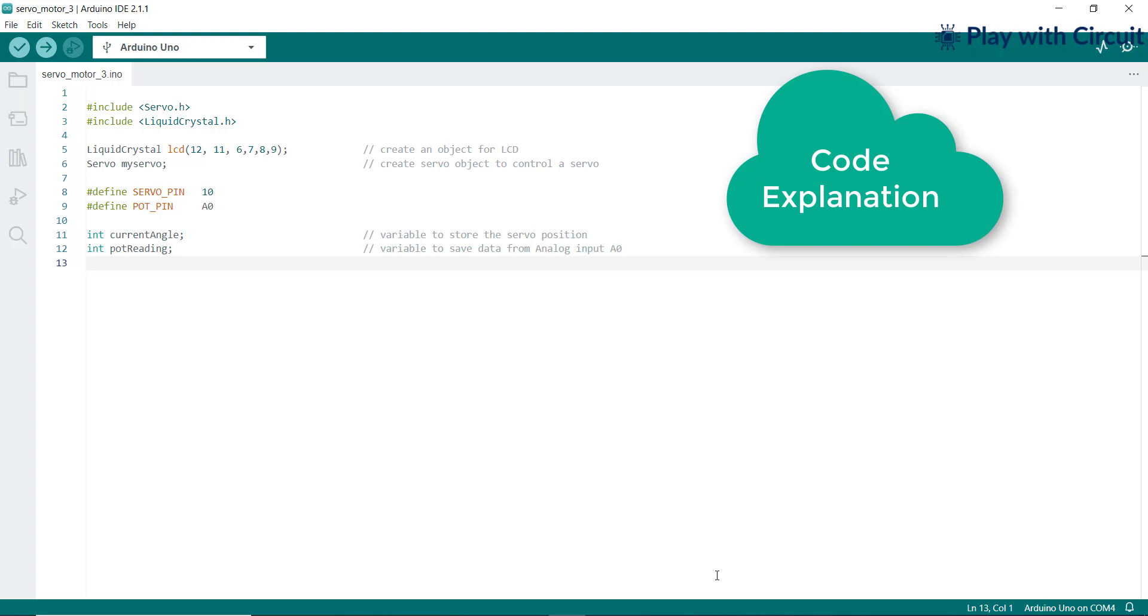In the Setup function, the servo motor is attached to pin 10. The LCD is initialized with 16 columns and 2 rows. The cursor is set to the first row, first column, and ArmAngle is printed on the LCD.